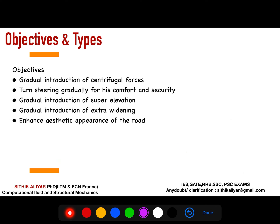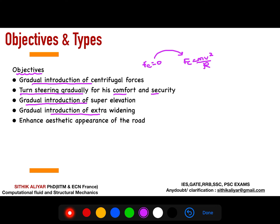The objective of providing a transition curve is to gradually introduce the centrifugal force — which is zero on straight roads and equals mv²/R on the curve — and to allow the driver to turn the steering gradually for their comfort and security, to gradually introduce super-elevation, gradually introduce extra widening, and to enhance the aesthetic appearance of the road.